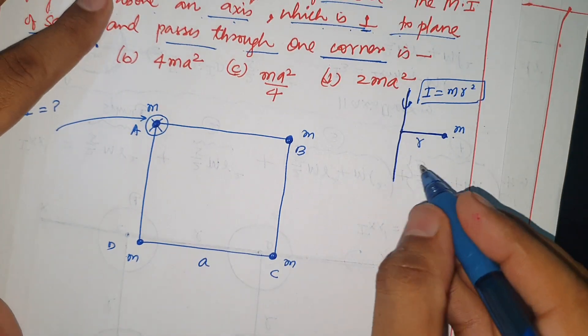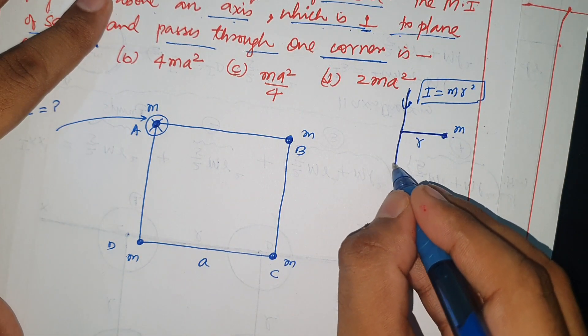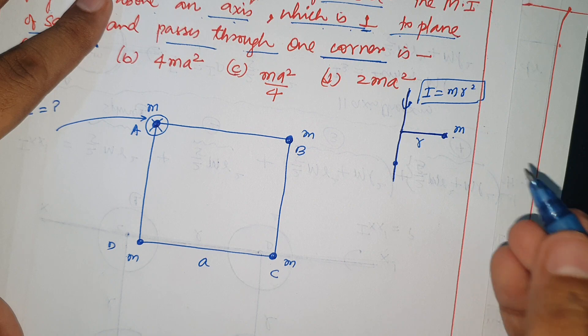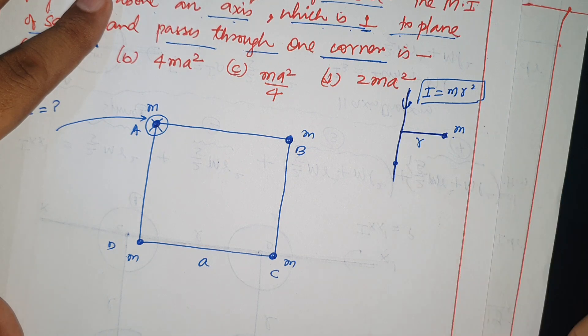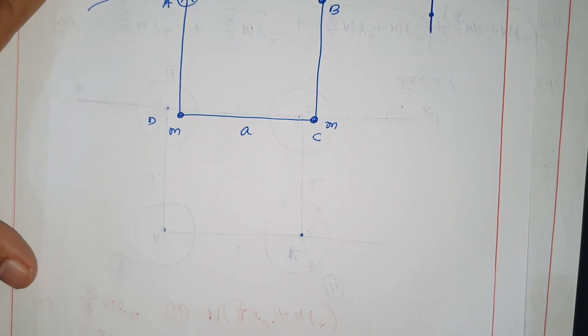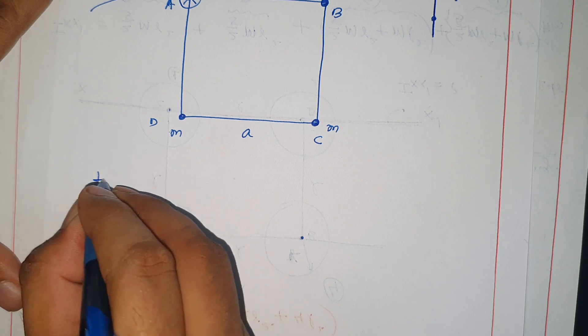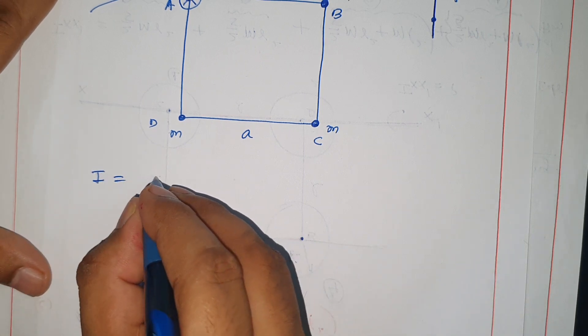Now, if the axis is here at this particle, then the perpendicular separation is zero. It will be zero. The whole system moment of inertia: particle A.